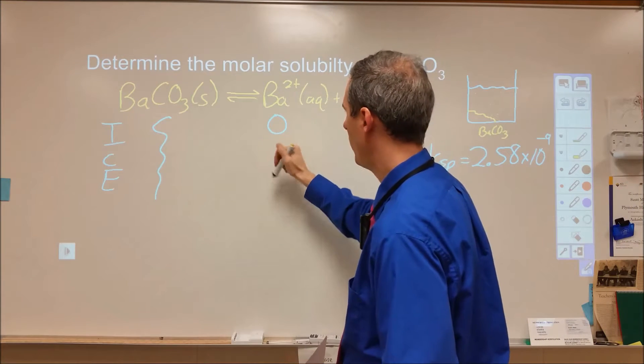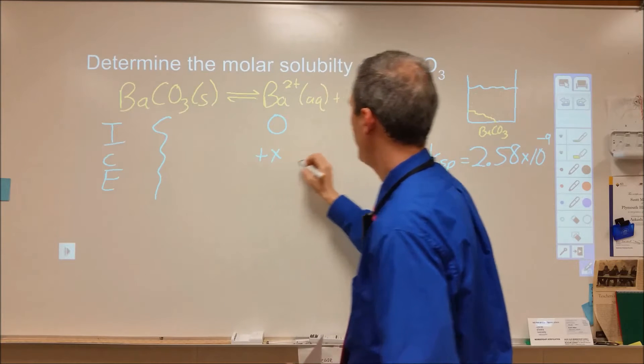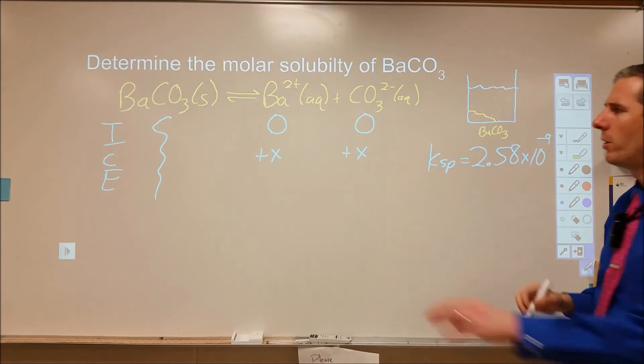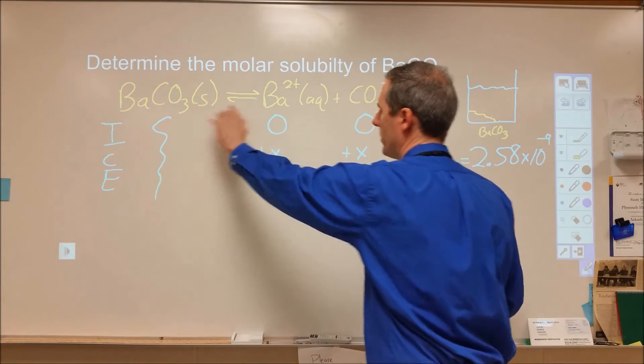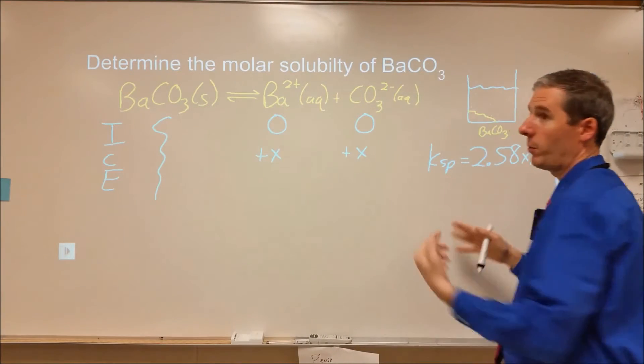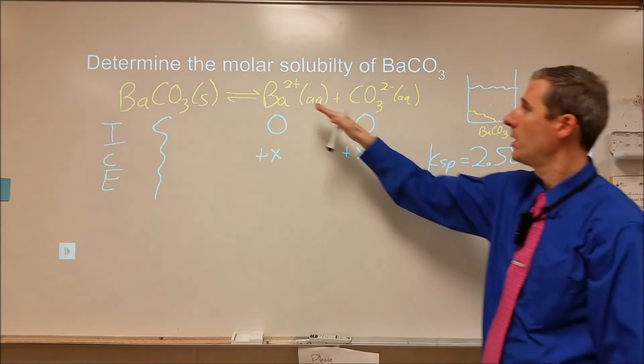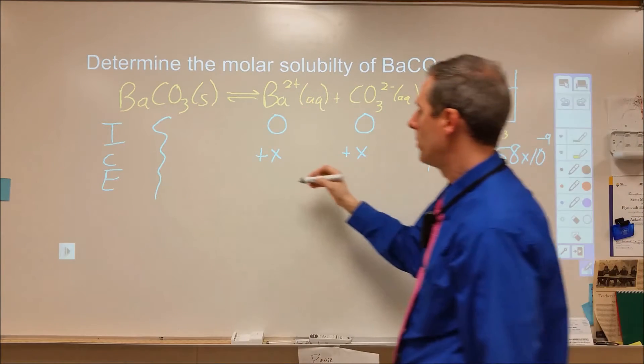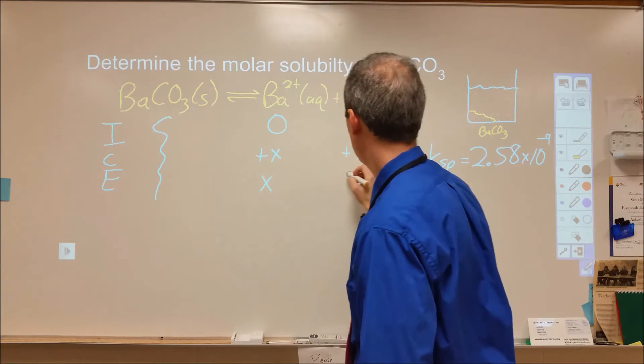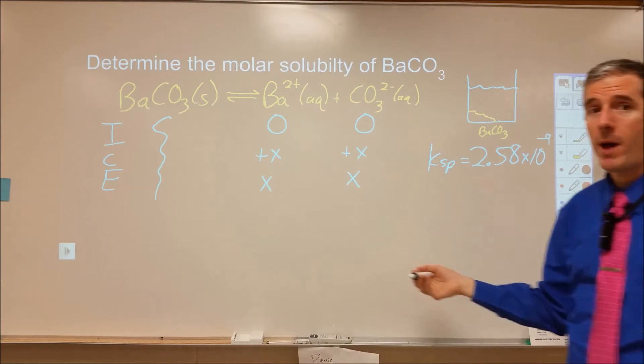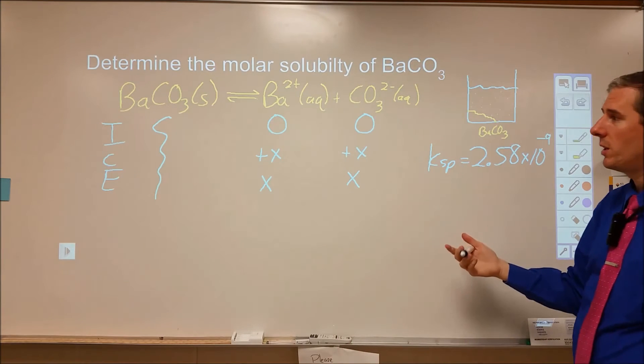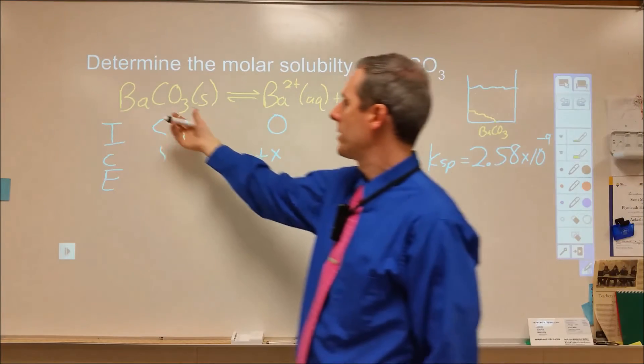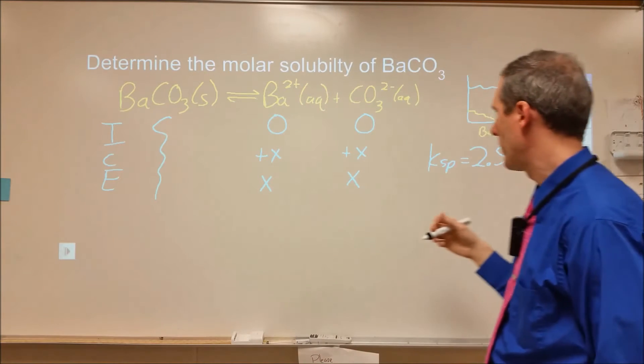We know that the change in barium and the change in carbonate will be the same. For every one of these formula units that dissolves, it produces one of these and one of those. We're going to end up with an equilibrium we don't know, but we do know they'll be the same in amount. So let's call each of them x. At equilibrium, we'll have x molar of barium and x molar of carbonate.